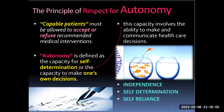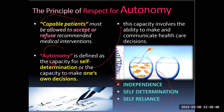The principle of respect for autonomy holds that capable patients must be allowed to accept or refuse recommended medical interventions. Autonomy is synonymous with self-determination or the capacity to make one's own decisions, and this capacity involves the ability to make and communicate healthcare decisions. Respect for autonomy is a norm that obliges us to respect the decisions of adults who have decision-making capacity. Three conditions must exist for autonomous action: intentionality, understanding, and absence of controlling influences. The moral rules derived from this principle include: tell the truth, respect the privacy of others, protect confidential information, and obtain consent for interventions with patients.